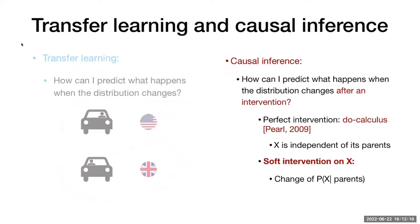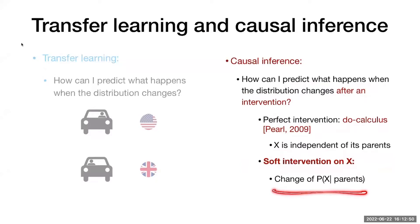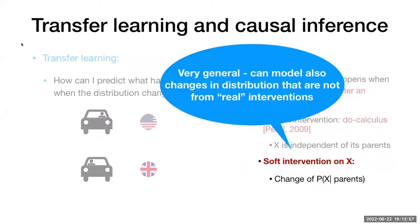In causality, we answer very similar questions. A perfect intervention fixes a variable to a value, making it independent of its parents. But in this talk I'll focus on soft interventions, which change the mechanism computing X from its parents. Soft interventions are very general — for example, data from two different labs could be considered a soft intervention, even if both are observational.